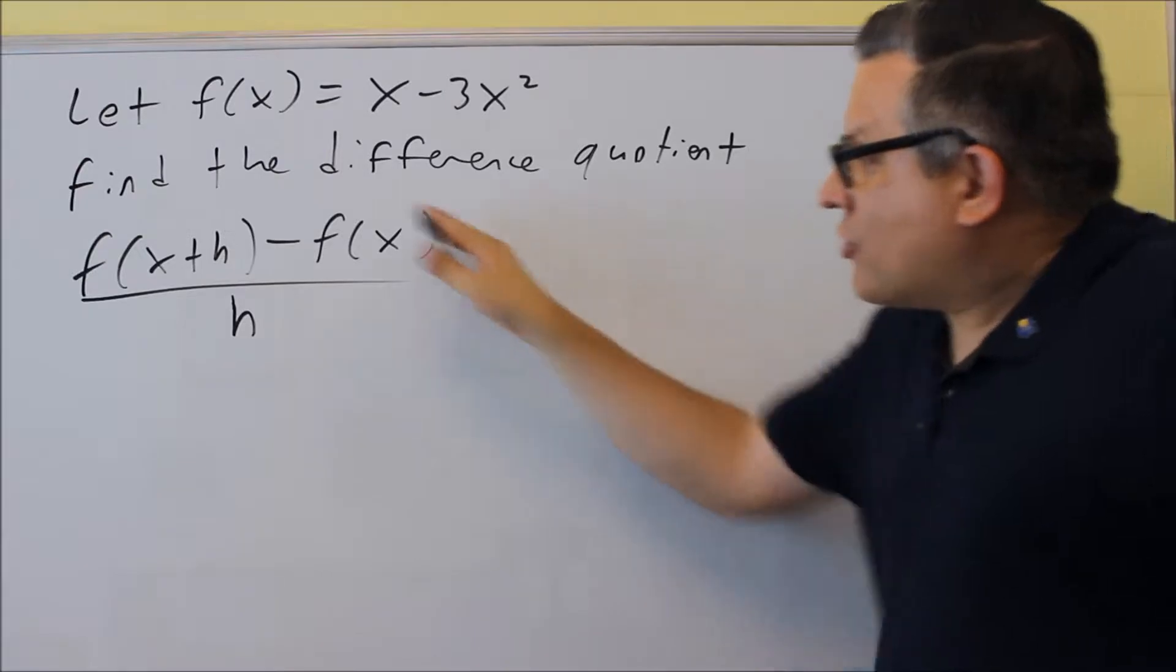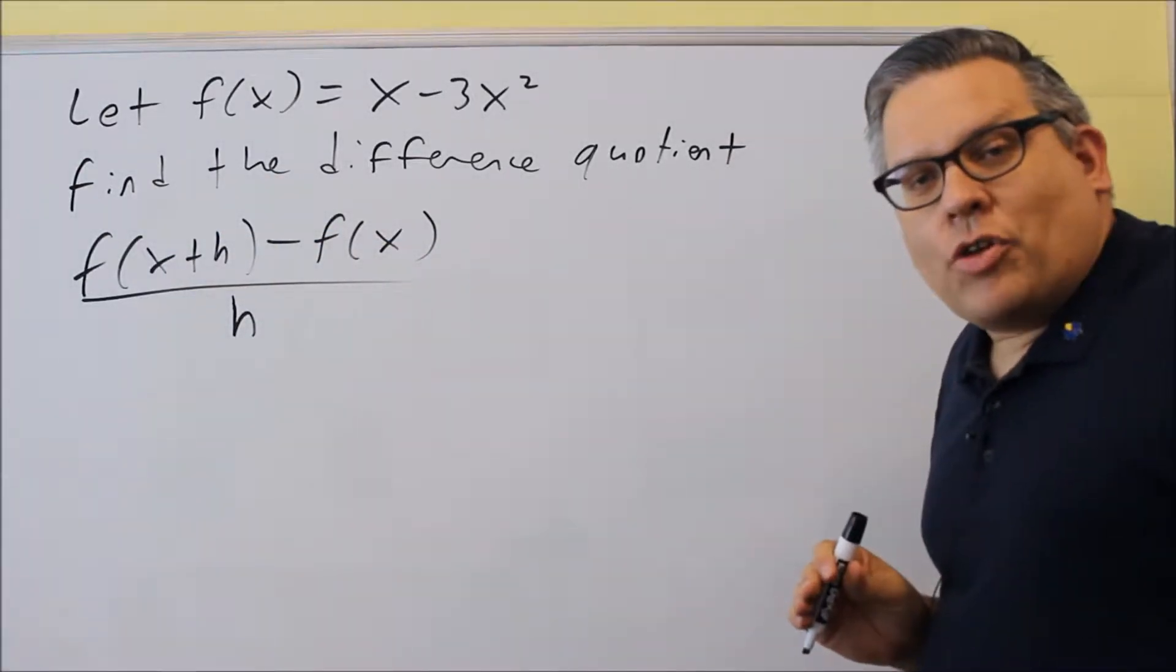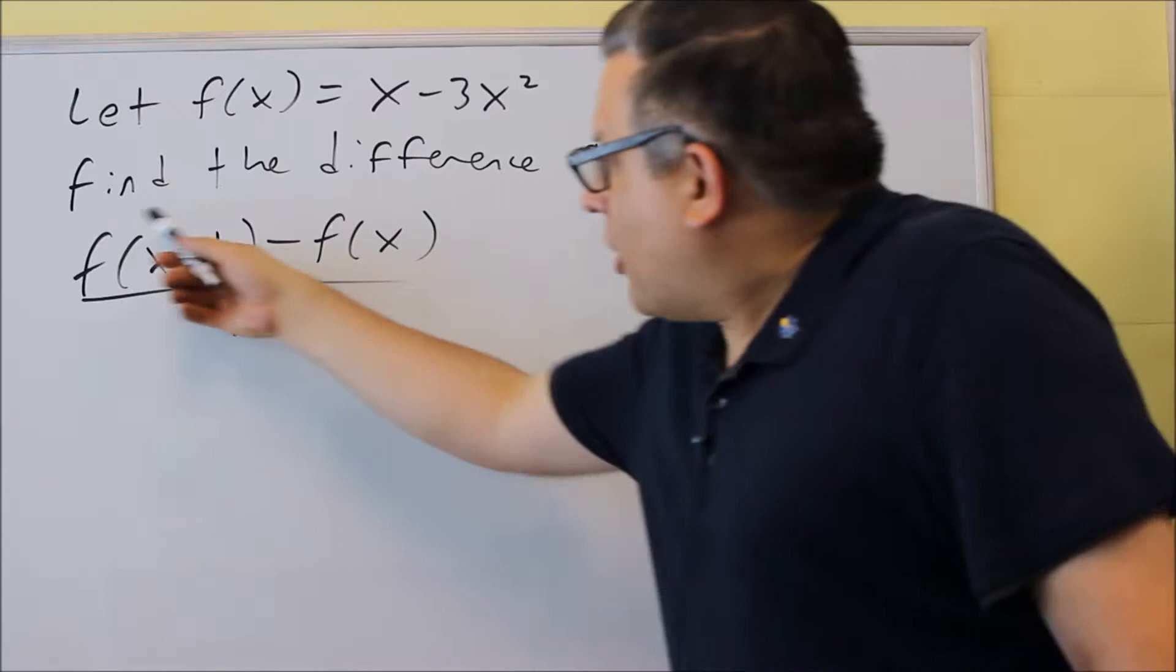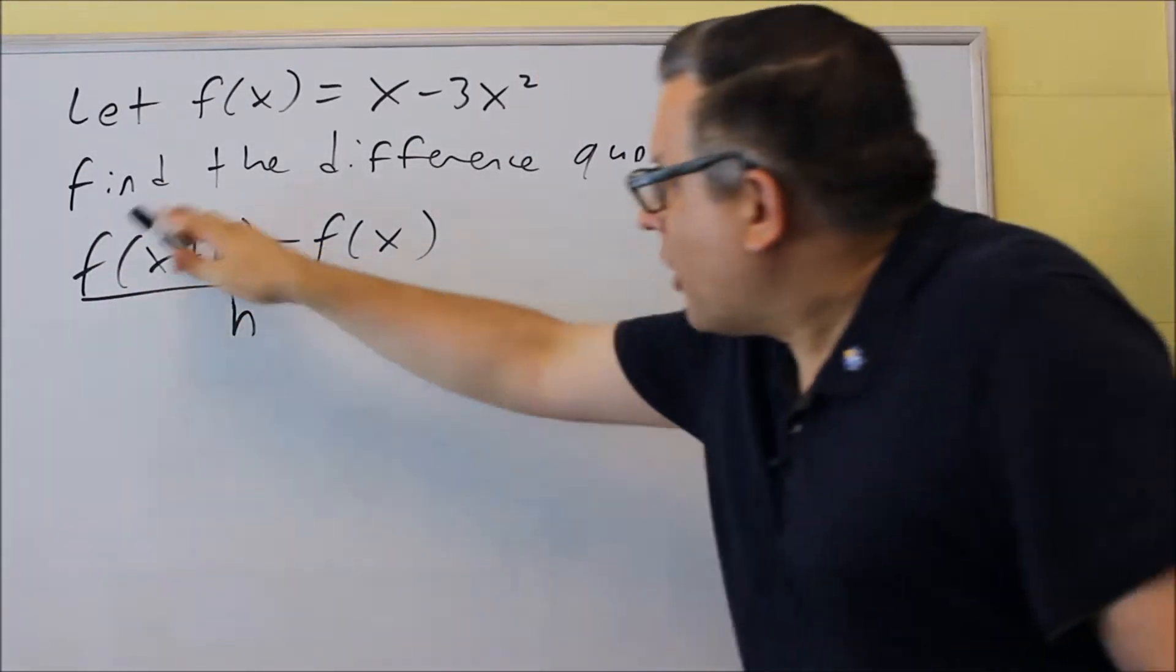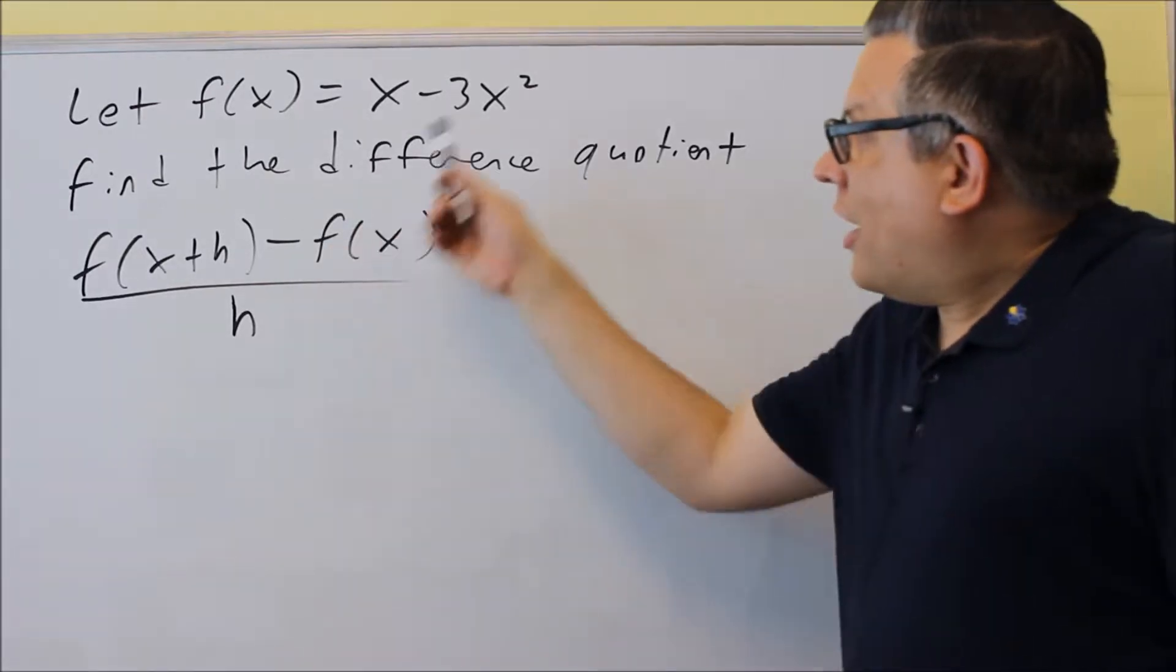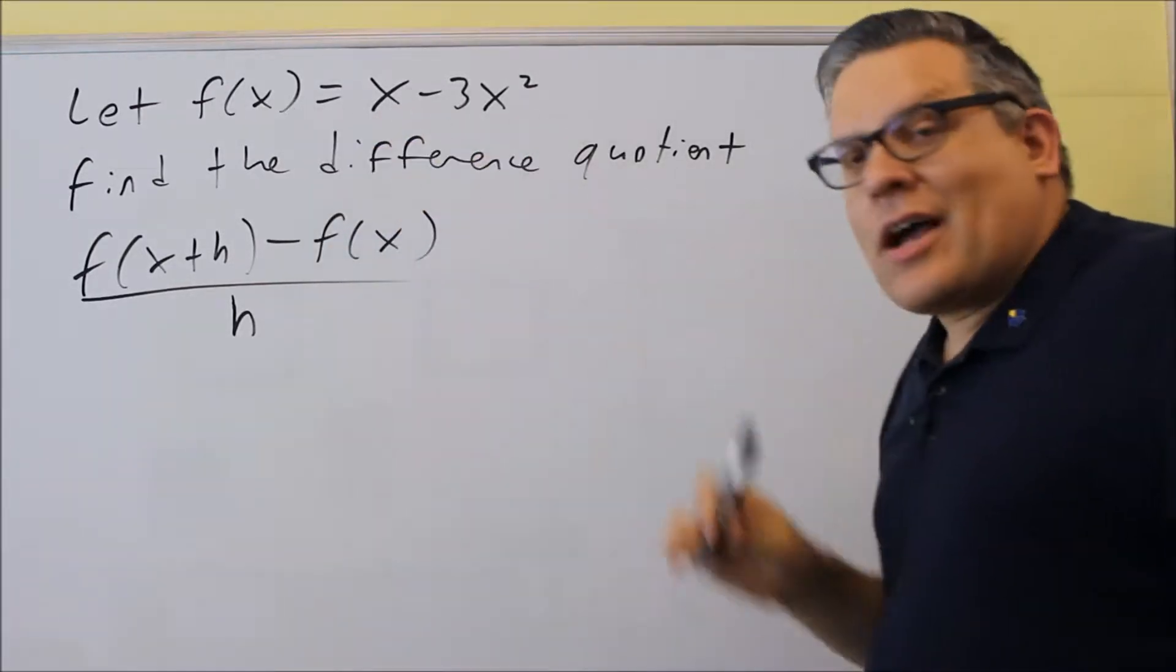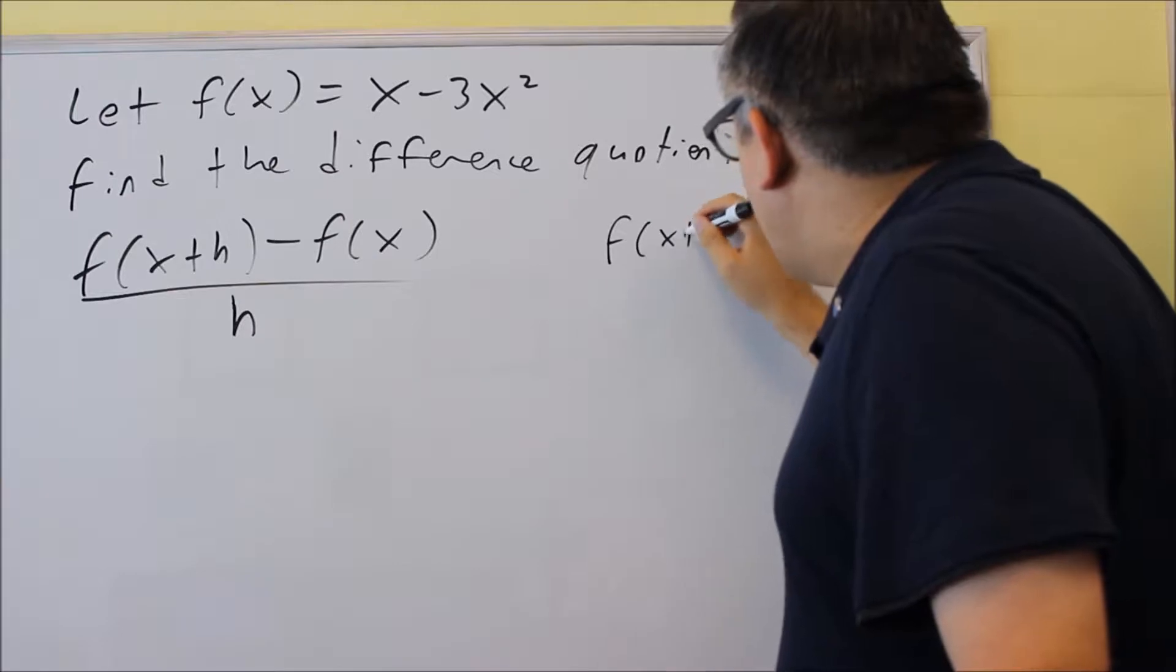Here's the formula. It should look familiar from pre-calculus. Now, part of this formula here is f(x+h), so I like to do this part of the formula first. So I want to find that for the function x - 3x². Let's do that off to the side.